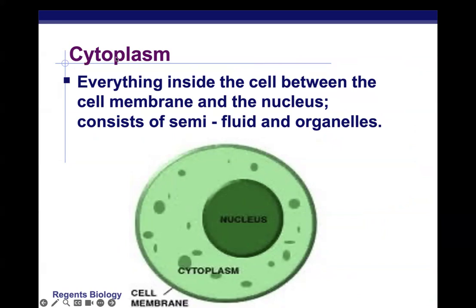Cytoplasm is the liquid material inside the cell that bathes all the organelles. We need to distinguish between cytoplasm and cytosol: cytoplasm refers to everything inside the cell — the fluid and the organelles together — while cytosol refers only to the fluid substance itself. So: cytoplasm equals cytosol plus the organelles floating in it.